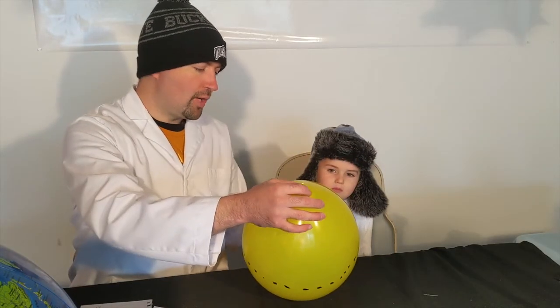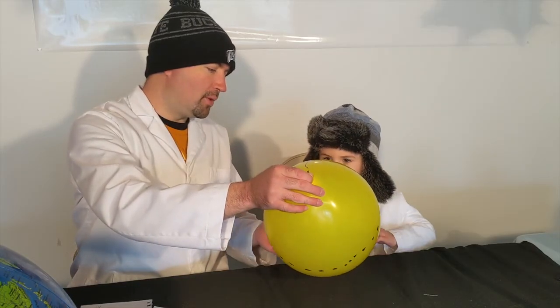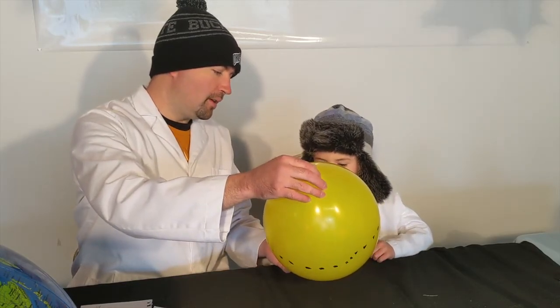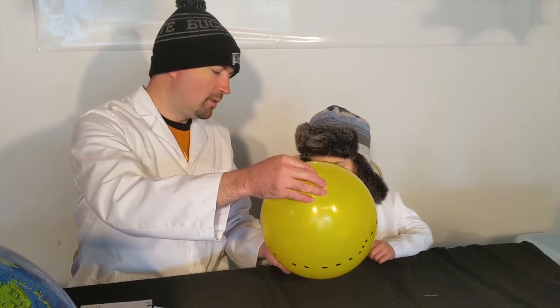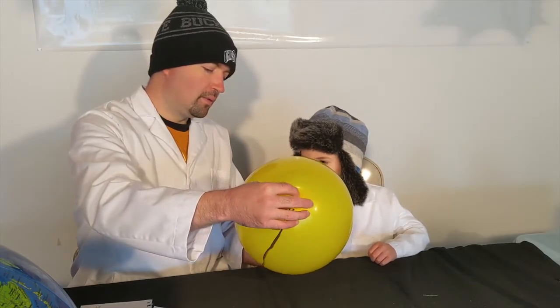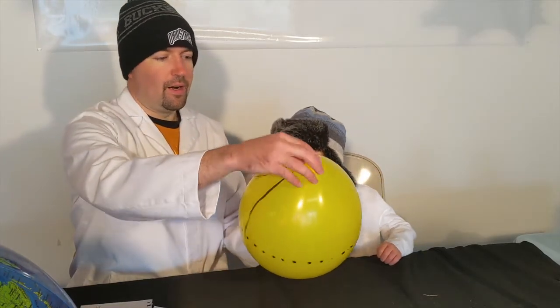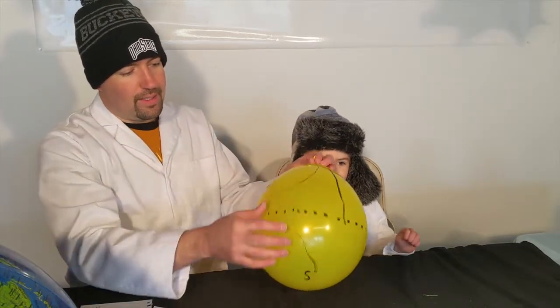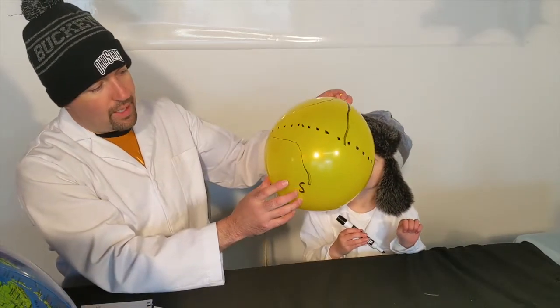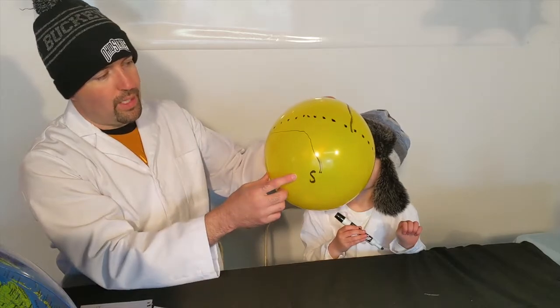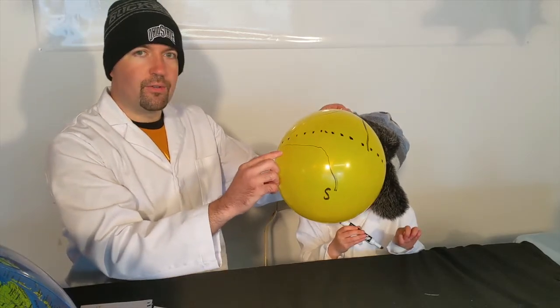Now, Logan, I want you to try to draw a straight line from the South Pole to the equator. I'm going to rotate the Earth again for you. All right. And here's Logan's attempt at making a straight line from the South to the equator. And what we can see here is that it's also deflected to the west.